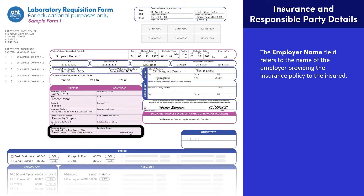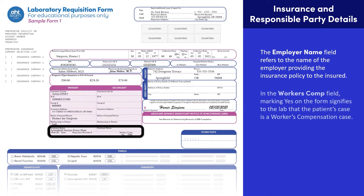In the workers' comp field, marking yes on the form signifies to the lab that the patient's case is a workers' compensation case. Workers' compensation pays for medical care to treat employees who are injured or become ill because of their jobs. If the patient has Medicaid, include the Medicaid state and physician's provider number.